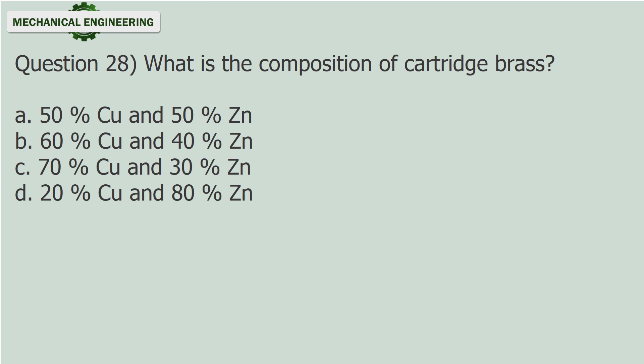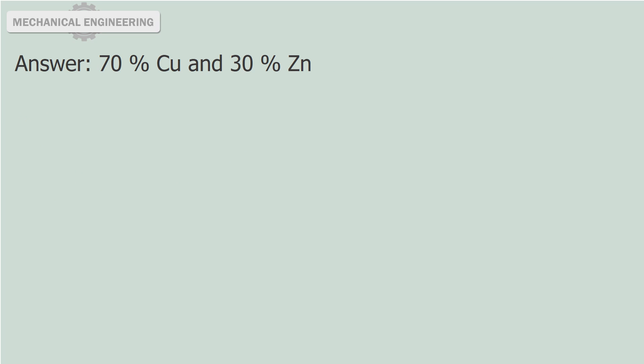Question 28: What is the composition of cartridge brass? A. 50% Cu and 50% Zn. B. 60% Cu and 40% Zn. C. 70% Cu and 30% Zn. D. 20% Cu and 80% Zn. Answer: 70% Cu and 30% Zn.